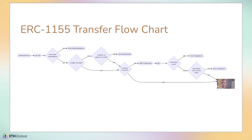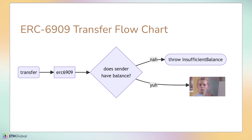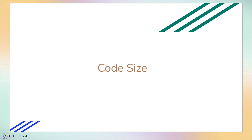So why not ERC-1155? I've mentioned they're basically functionally identical, but why switch? The biggest reason is simplicity. To make a simple transfer — say Alice wants to transfer a token to Bob — ERC-1155 has a pretty complex flow: check balance, check if the sender is the caller, check if they're an operator, check if the receiver is a contract, check if they implement the right interface. It's a mess. ERC-6909, on the other hand, is straightforward: does the sender have balance? If so, send the tokens; otherwise throw an error.